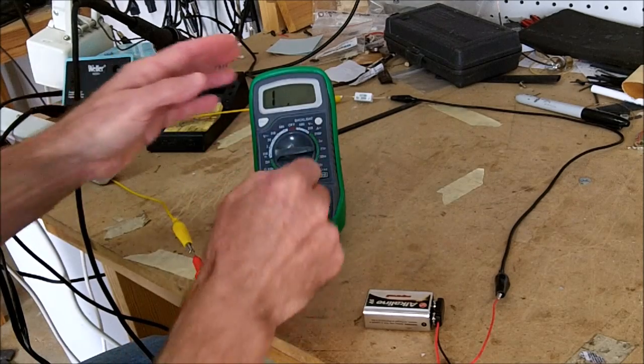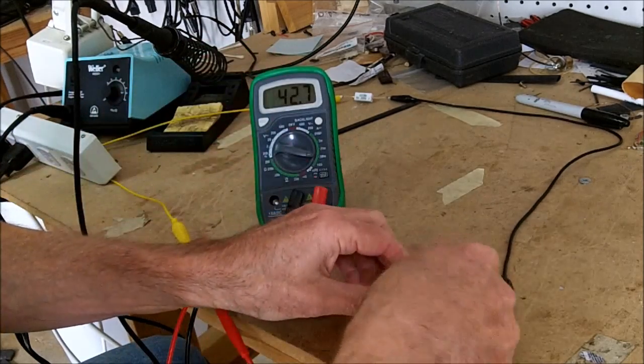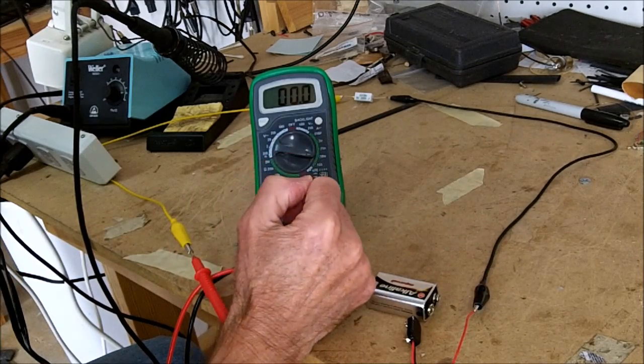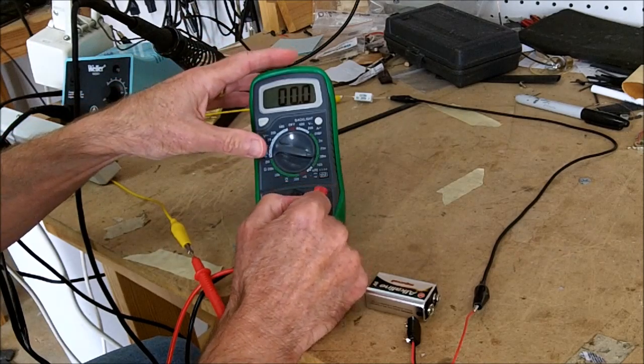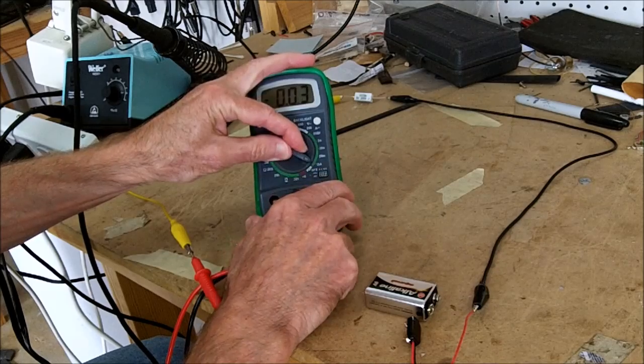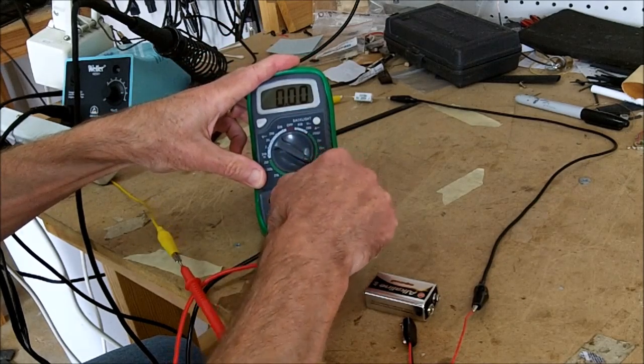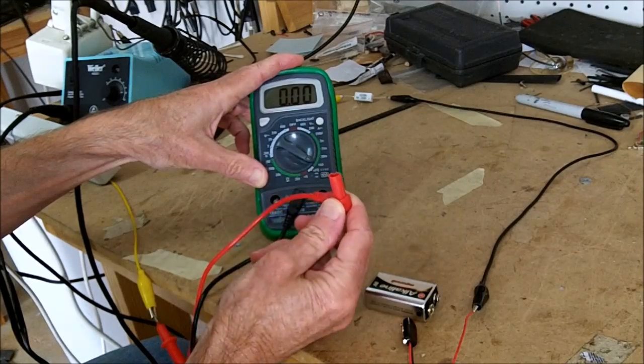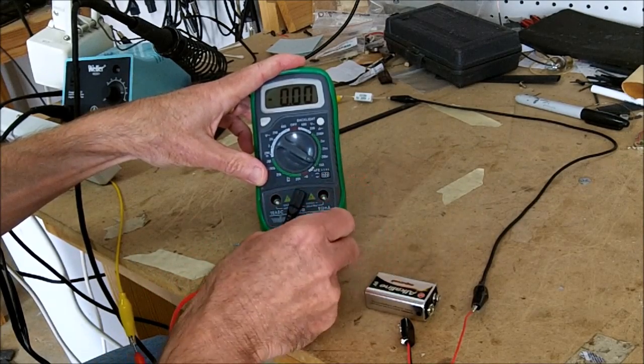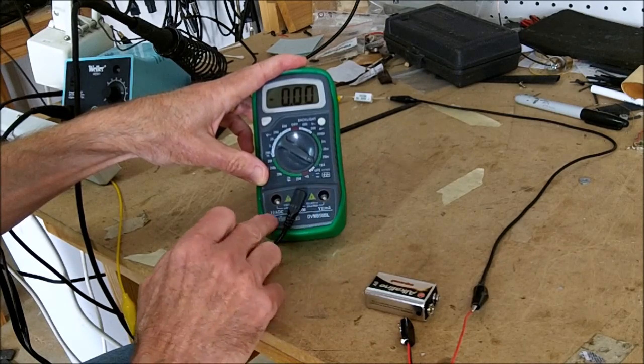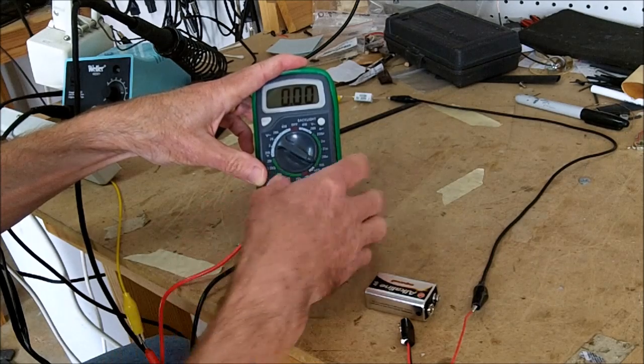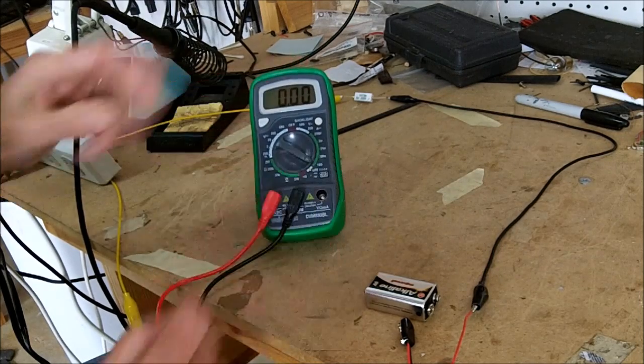Now, if you want to measure DC current with this particular meter and you want to measure more than 200 milliamps, there is a 10 amp setting here. To use that setting, what you need to do is take this red connector out of this first position here—they're labeled over here—and plug it into the 10 amp DC connector.